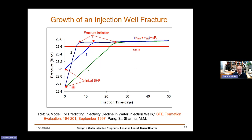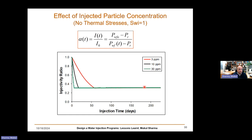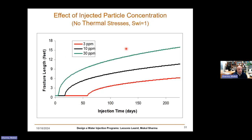The growth of an injection well fracture: initial bottom hole pressure goes up, exceeds σ_Hmin, and then fractures propagate while the bottom hole pressure remains virtually constant. Injectivity declines and then becomes relatively constant. The quality of the water — 3 ppm versus 30 ppm — controls how quickly this happens. For dirty water, this happens very quickly; for clean water, it may take several months. Without thermal stresses this is one picture; with thermal stresses things are more complicated. Fractured lengths tend to grow faster with dirtier water.